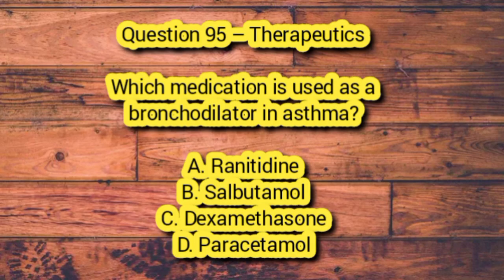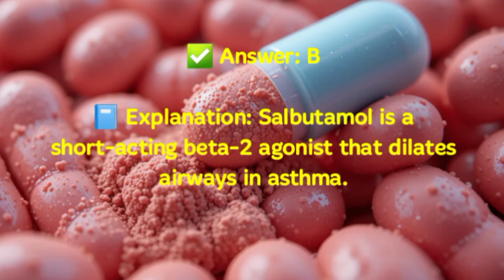Question 95 – Therapeutics. Which medication is used as a bronchodilator in asthma? A. Ranitidine. B. Salbutamol. C. Dexamethasone. D. Paracetamol. Answer: B. Explanation: Salbutamol is a short-acting beta-2 agonist that dilates airways in asthma.